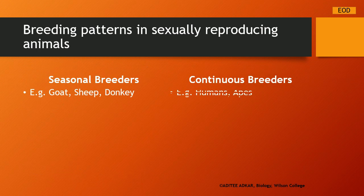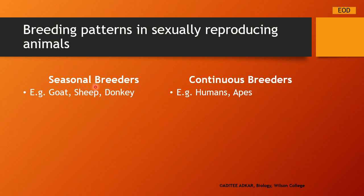Let us understand what are breeding patterns in sexually reproducing animals. Breeding pattern means whether an animal can breed only in a particular season or throughout the year. Depending on this, we classify animals as seasonal breeders and continuous breeders. Seasonal breeders can reproduce only in a particular season — examples include goats, sheep, and donkeys. Continuous breeders do not have a fixed season and can reproduce throughout the year — examples include humans and apes.